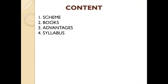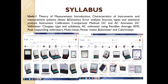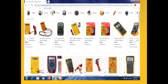This lecture is resumed from the last lecture. We have already seen the scheme and books. So we are moving on to the syllabus. We have already discussed about three units. In Unit 1, introduction and characteristics of instruments will be discussed, along with DC and AC ammeter, voltmeter, and multimeter.